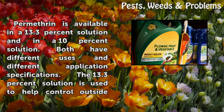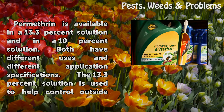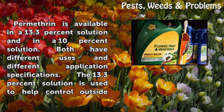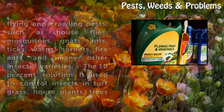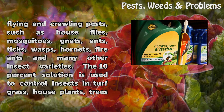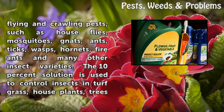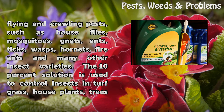Both have different uses and different application specifications. The 13.3% solution is used to help control outside flying and crawling pests, such as house flies, mosquitoes, gnats, ants, ticks, wasps, hornets, fire ants and many other insect varieties.